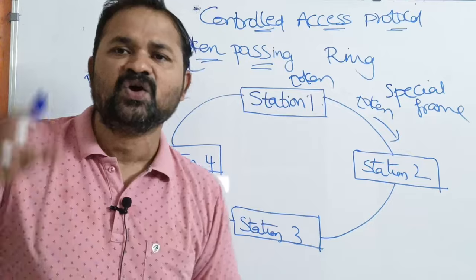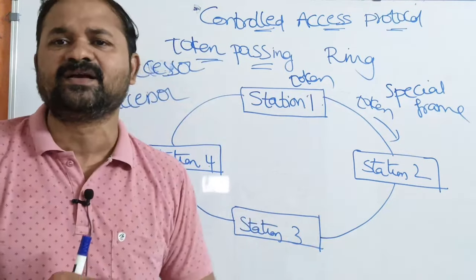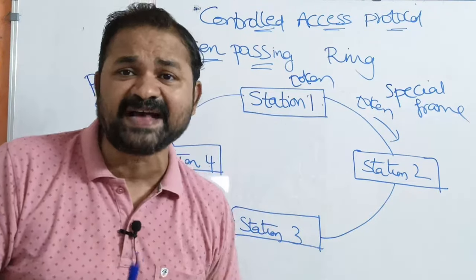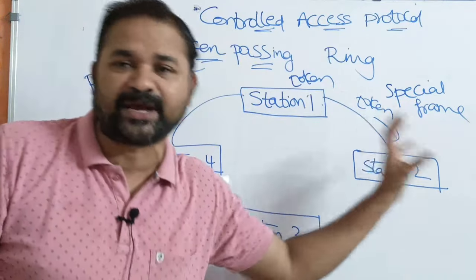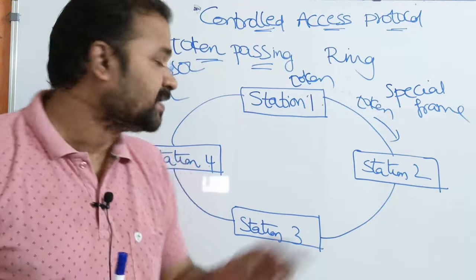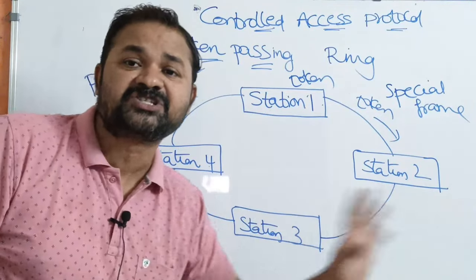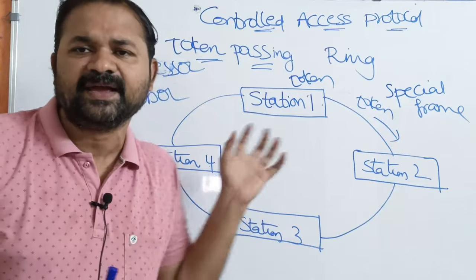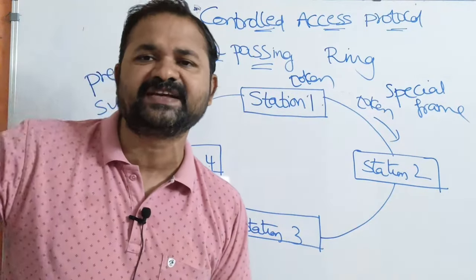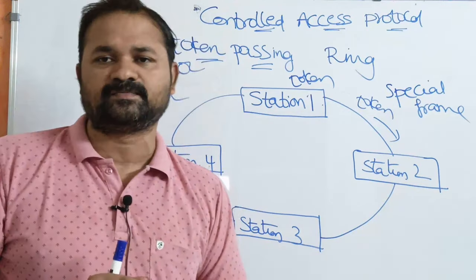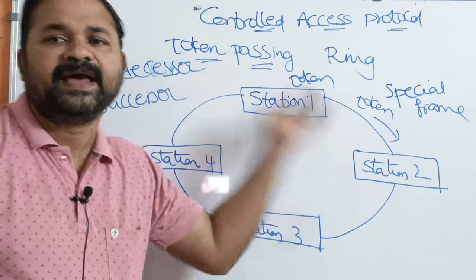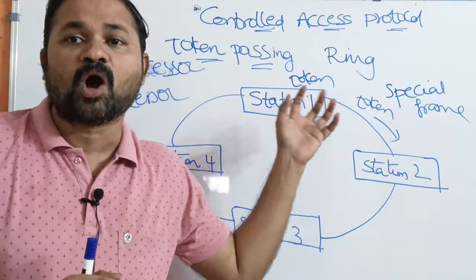Station four can send data only if it has the token, and while station four is sending, no other station is allowed to send data because there is only one token. If station one has data to send but has no token, station one has to wait until it receives the token from its predecessor, that is station four. After station four sends the data, it passes the token to its successor, which is station one.